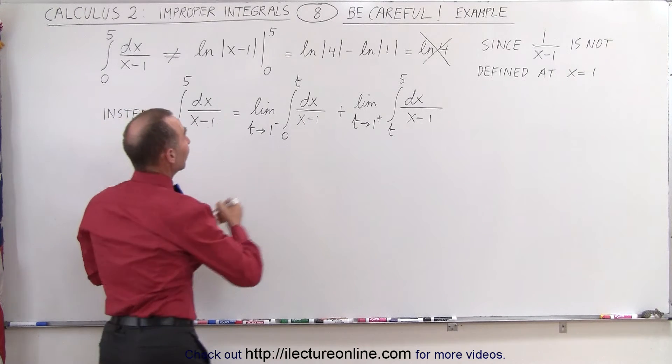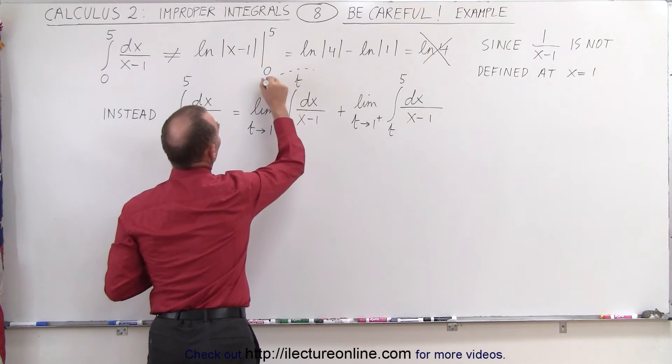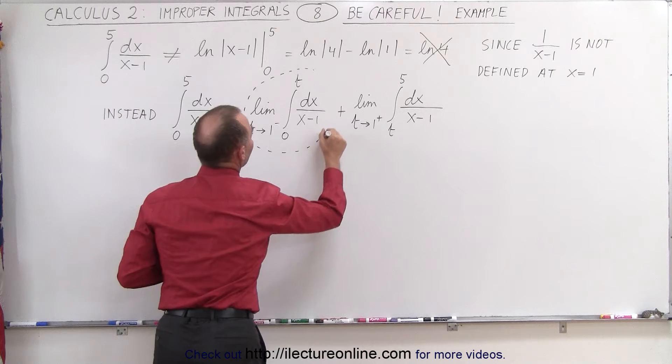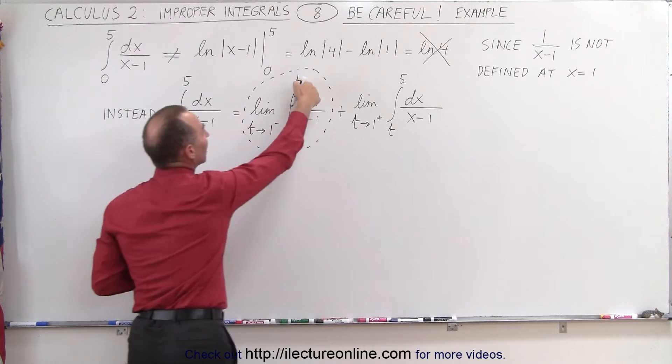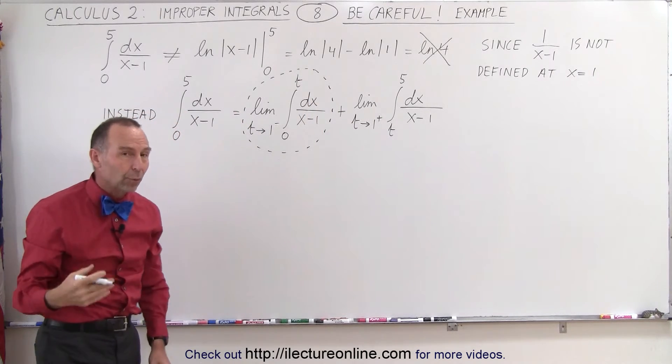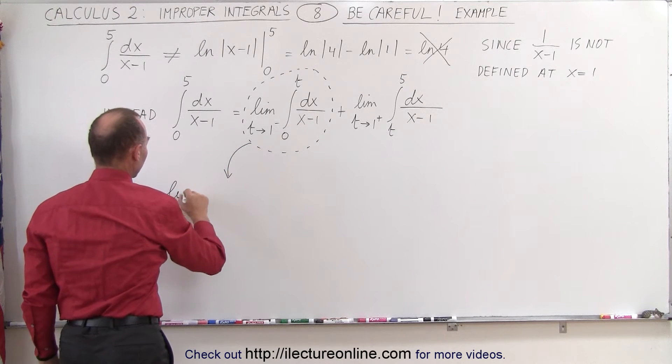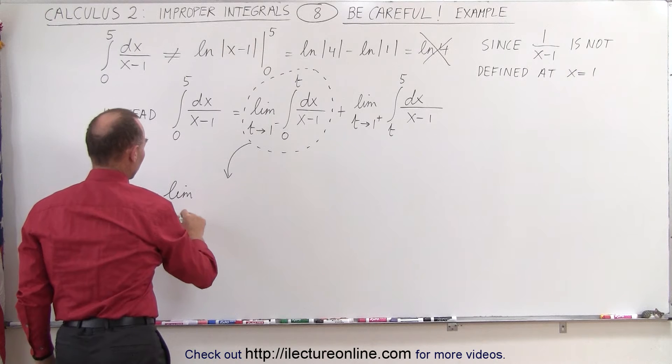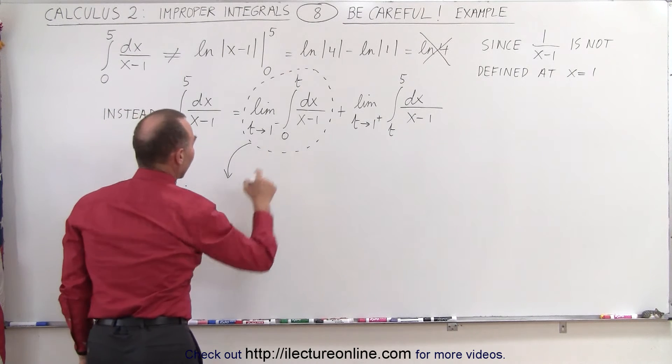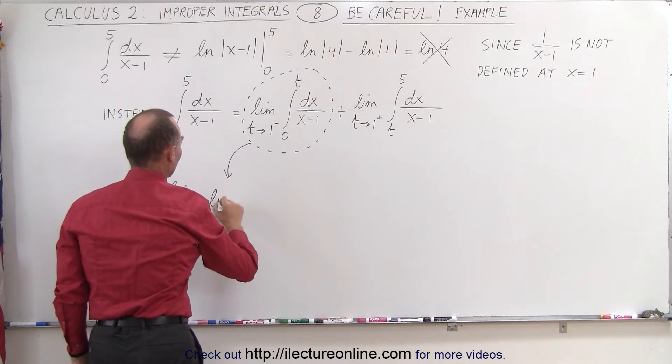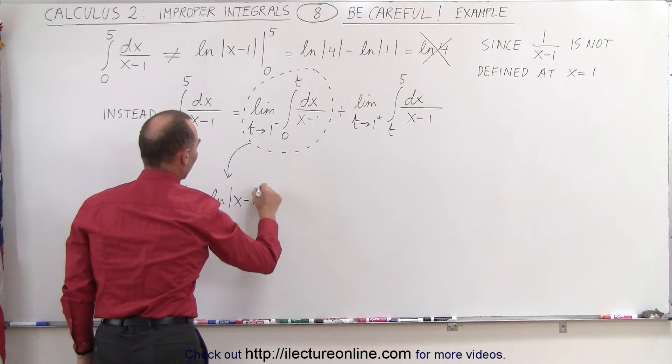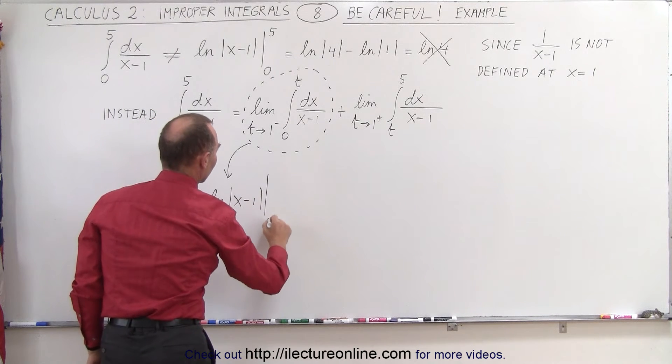And what we're going to do first is take a look at this term right here. We're going to integrate that, plug in the limit t, and then allow t to go to 1 to see what happens. So when we do that, this will be the limit as t approaches 1 from below, and when we integrate that we get the natural log of x minus 1 evaluated from 0 to t.